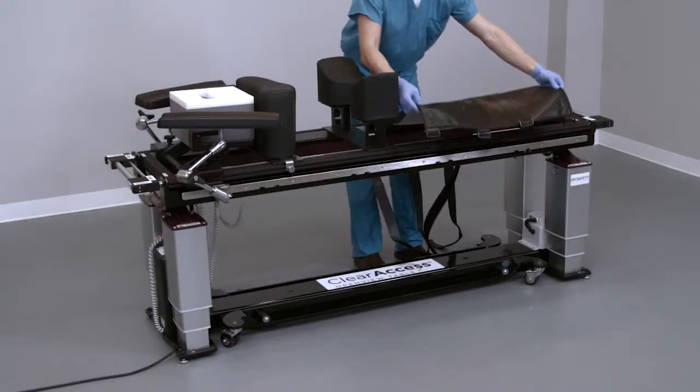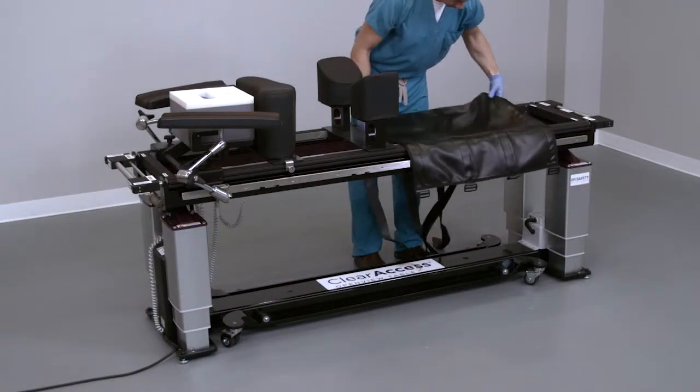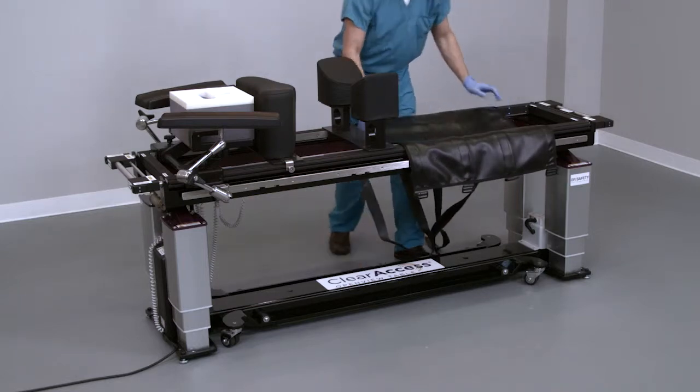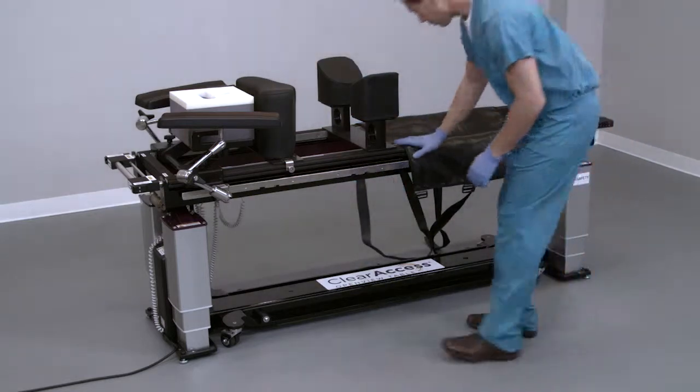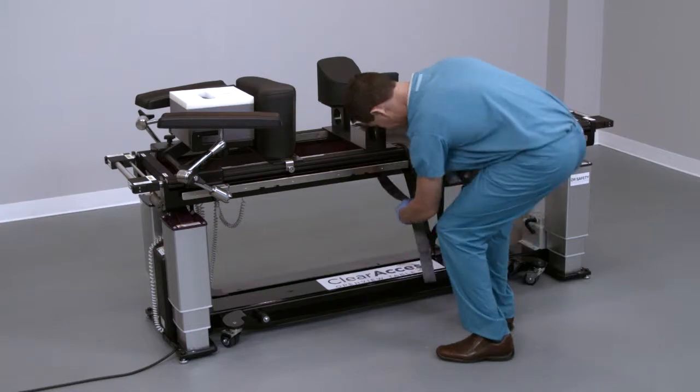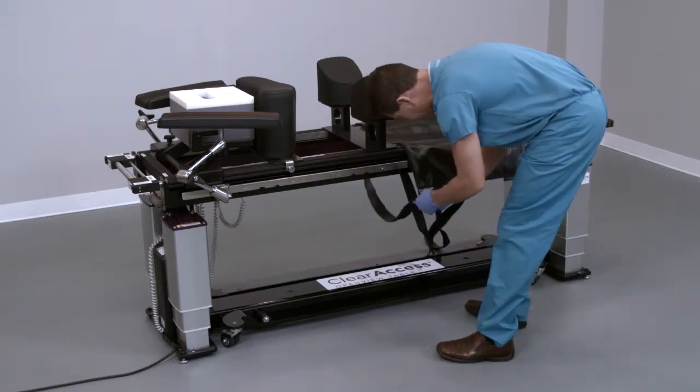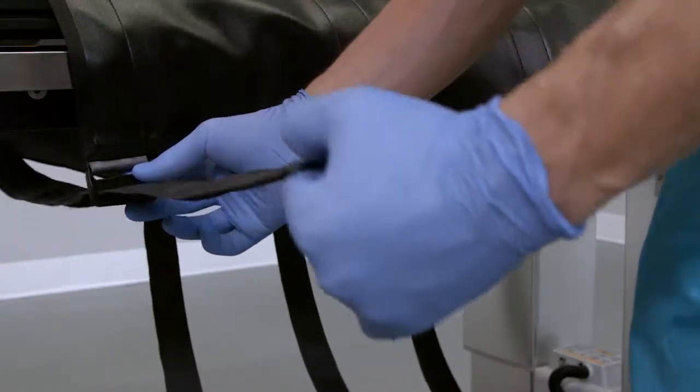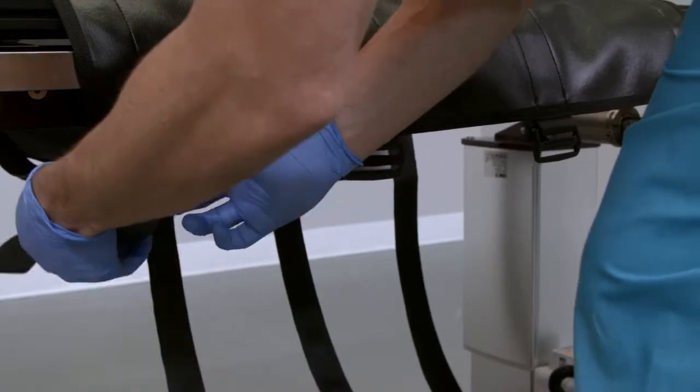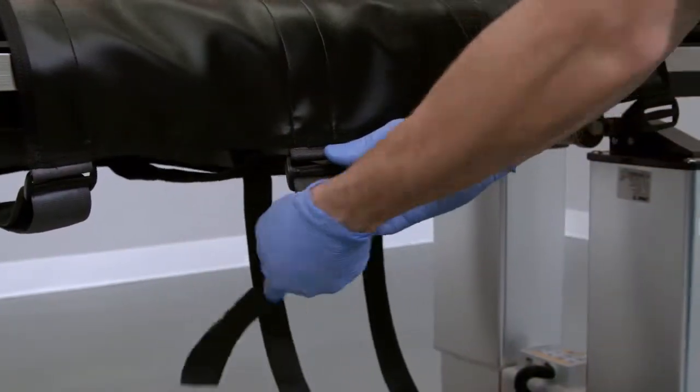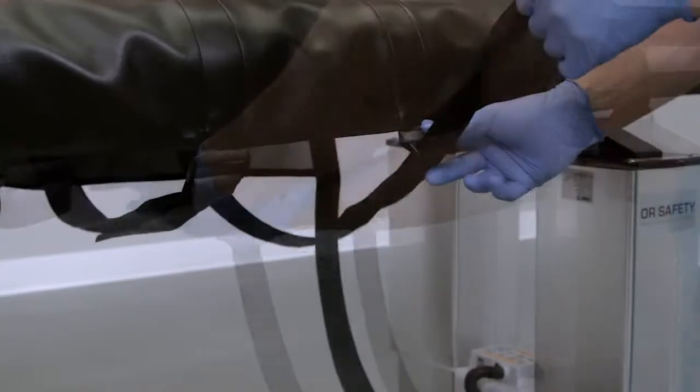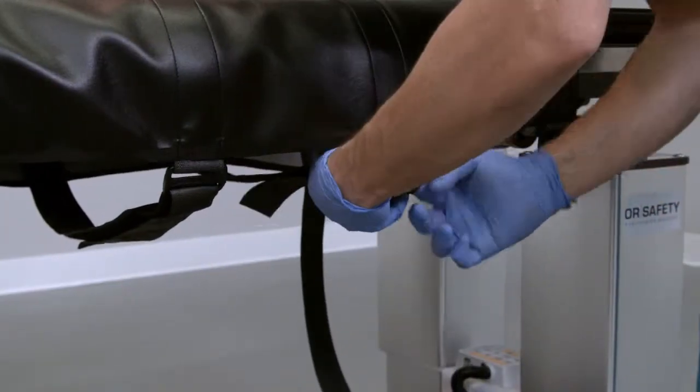To install an adjustable leg sling, wrap the straps around the foot end section of the ClearAccess table. Feed the four straps through their respective buckles on the opposite side of the sling and secure. The sling can be adjusted for each patient. The straps on the sling consist of a double-sided hook and loop closure that allows for continuous adjustment along the length of the strap.